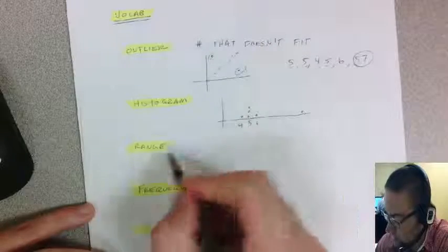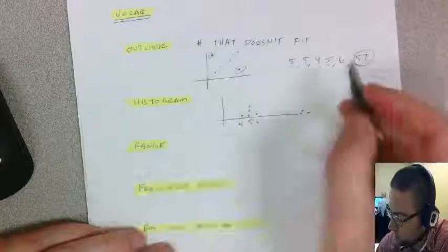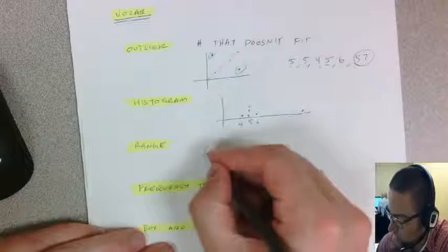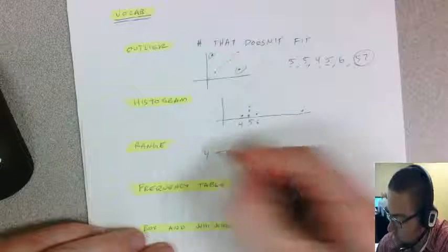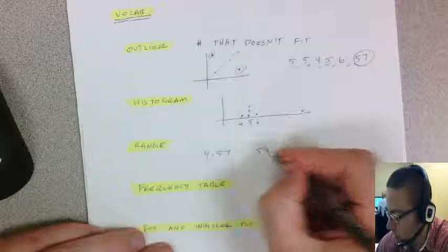Range is just like we used in functions, it gives you the high and the low. So in this list, we would say the range goes from 4 to 57, or you could say it has a range of 53. There's a range of 53 different numbers from the high to low.